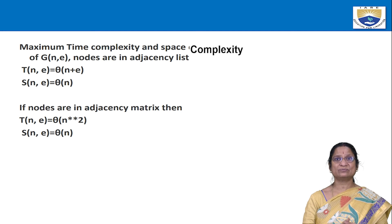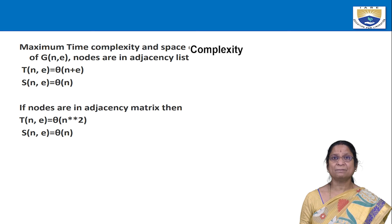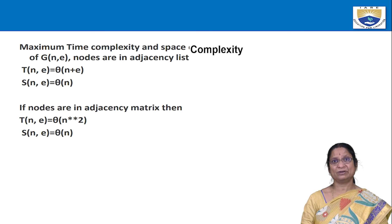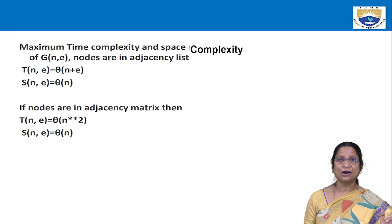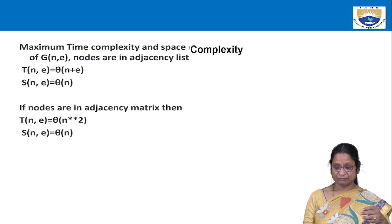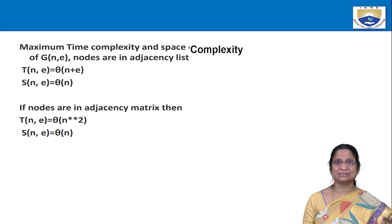In summary, the time and space complexities of BFT and DFT depend on the data structure used to represent the graph — adjacency list or adjacency matrix — not on the traversal technique itself. Complexities are the same for both BFT and DFT. Both use additional space for the auxiliary data structure: a queue for BFT and a stack for DFT, each of size proportional to the number of vertices.